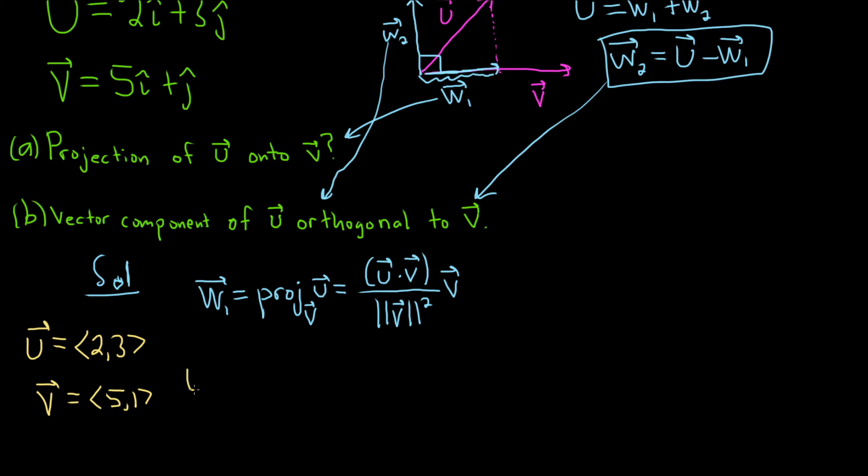So the formula needs u dot v. Let's do it over here on the side. So 2 times 5. You multiply the components and then you put a plus sign and then 3 times 1. That's how you compute the dot product. So 10 plus 3. So u dot v is equal to 13.